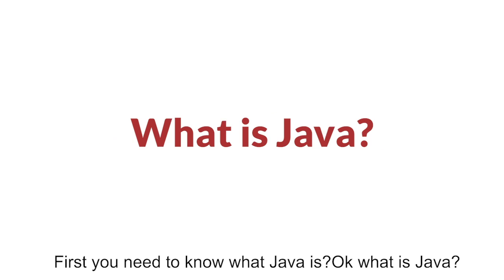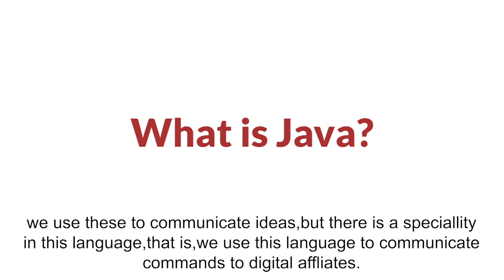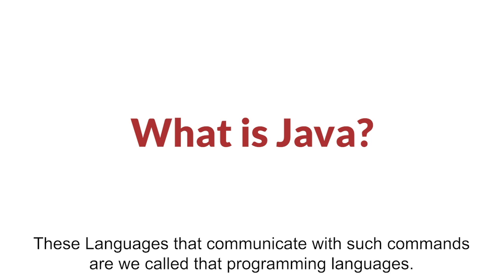What is Java? Java is a language, similar to English, Spanish, Hindi, Latin — an extract of all human languages we use to communicate ideas. But there is a specialty in this language: we use it to communicate commands to digital devices.